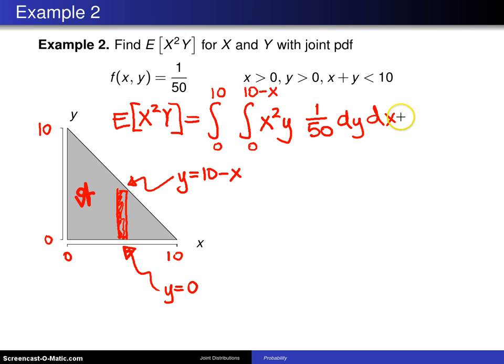In this particular case, I'm not going to put you through the integration details. You can do those as an exercise. The answer is 100/3, which is about 33.33. So the expected value of x squared y,